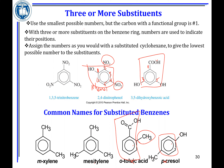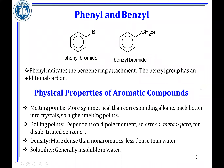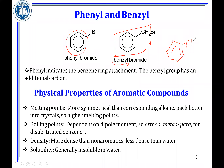Phenyl is a benzene ring attached to something else — it's often the high-priority group. Phenol is a benzene ring attached to OH. Benzyl is a benzene ring carrying a CH2 group attached to another high-priority functional group — for example, benzyl bromide. As long as you know that the benzene-CH2 unit is the benzyl group, it can be attached to bromide, chloride, or other groups.